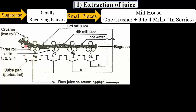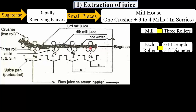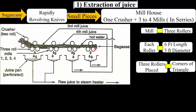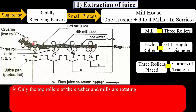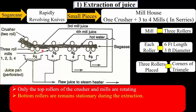The mill house consists of one two-rolled crusher and three to four three-rolled mills arranged in series. Each mill has three rollers, each having dimensions of six feet in length and three feet in diameter. The three rollers are placed at the three corners of a triangle. Only the top rollers rotate, while the bottom rollers remain stationary during juice extraction.